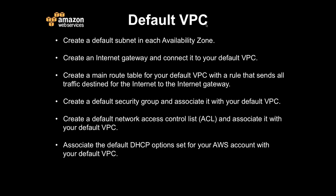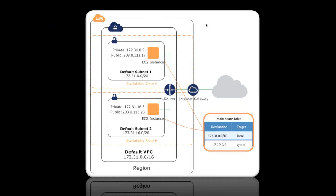Here's what it looks like whenever you launch anything. In this example, we've got a region with two availability zones. There's a default subnet 1 and a default subnet 2 that we create. We set up the router and the Internet gateway for you — these are public-facing subnets. The default block is going to be 172.31.0.0 with a slash 16, giving you 65,536 private IP addresses available. For the subnets, those are always going to be slash 20, so you've got up to 4,096 addresses per subnet. These are defaults — you do have the ability to change them.